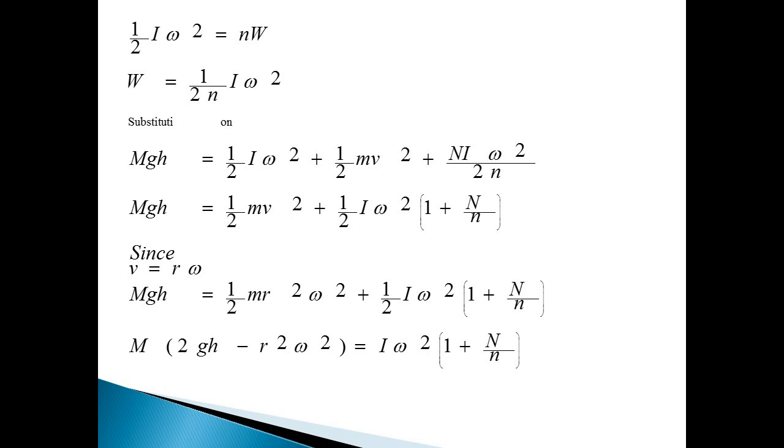Taking Iω² terms together, we can write it as Mgh = ½mv² + ½Iω²(1 + N/n). For rotational case, as we know, v = rω. So Mgh = ½mr²ω² + ½Iω²(1 + N/n).